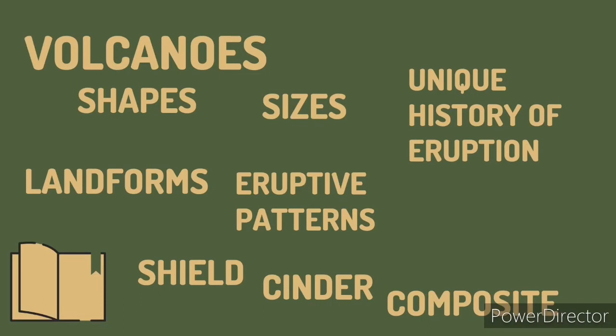Volcanoes come in different shapes and sizes, and each structure has a unique history of eruption. Volcanologists have been able to classify them according to their landforms and eruptive patterns. We have considered three general volcanic types according to the shape of their cones: shield volcanoes, cinder cones, and composite cones. Volcanic activity can be very fascinating. After an explosive eruption, a scenic cone-shaped structure may be produced, or changes on its slope can be observed. The emission of a volcano provides us with clues on what materials are found inside the earth. Some eruptions are very explosive, while many others are not. Let us describe the different types of eruptions.